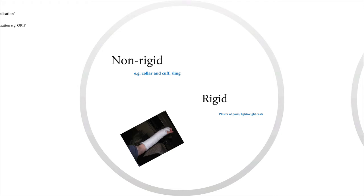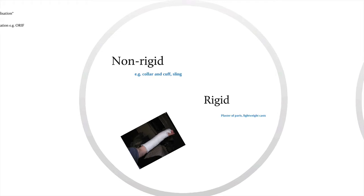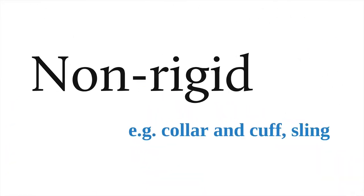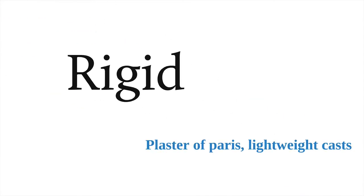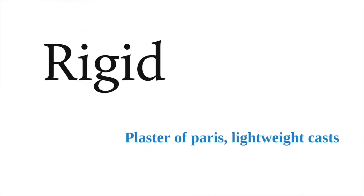Fractures may be held by non-rigid or rigid support. Non-rigid, for example, a collar and cuff or a sling for a clavicle fracture. Rigid, for example, plaster of Paris or a lightweight cast.